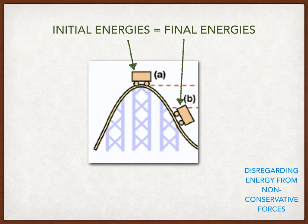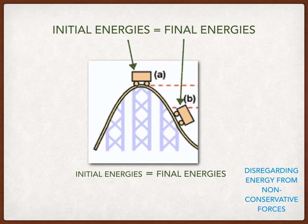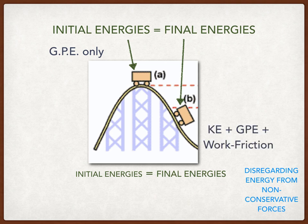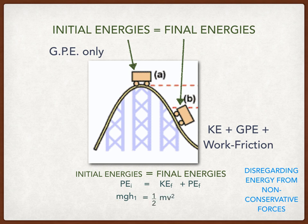For this diagram, disregarding energy from non-conservative forces, initial energy equals final energy. For the initial energy, we only have gravitational potential energy. Disregarding friction, we have: potential energy initial equals kinetic energy final plus potential energy final. The working formula is: mgh₁ equals ½mv² plus mgh₂.